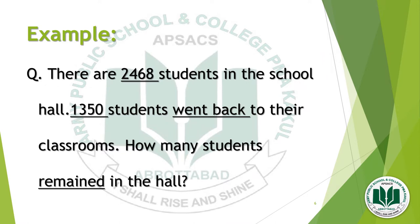Following step one — read the problem carefully — the problem is: there are 2468 students in the school hall; 1350 students went back to their classrooms. How many students remain in the hall? Following step two, we underline the important words or operations: 2468, 1350, went back, and remained. The words 'went back' and 'remained' show that this is a subtraction question.